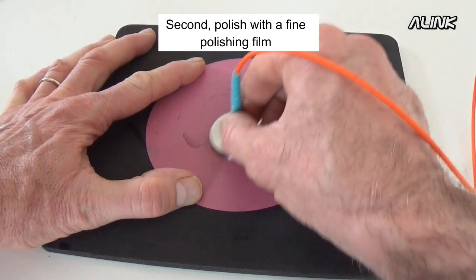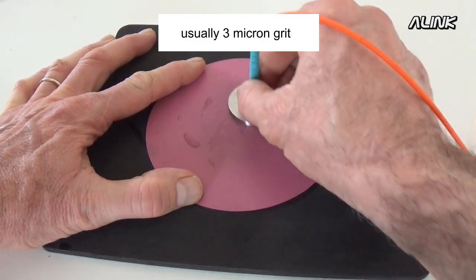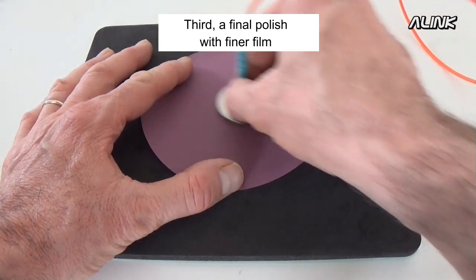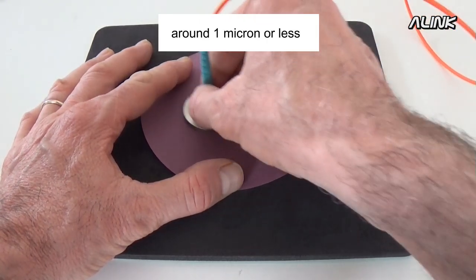Second, polish with a fine polishing film, usually 3 micron grit. Third, a final polish with finer film, around 1 micron or less.